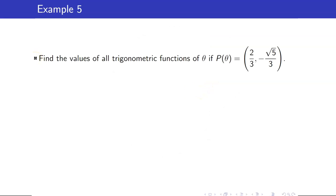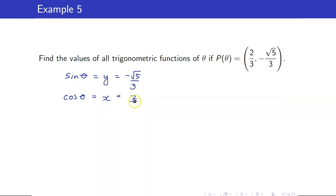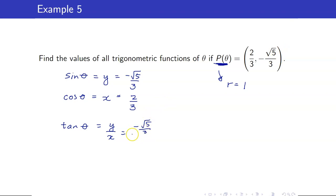For example, find all trig function values if P(theta) = (2/3, -√5/3). Sine theta = -√5/3, cosine theta = 2/3 — since R = 1, we use coordinates directly. Tangent theta = (-√5/3) / (2/3) = -√5/2. The remaining three values are just reciprocals.